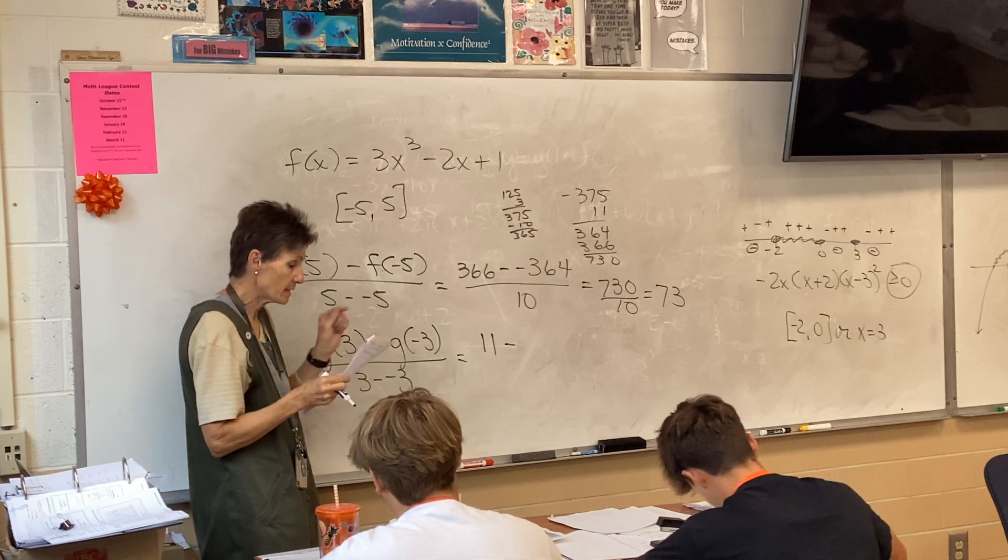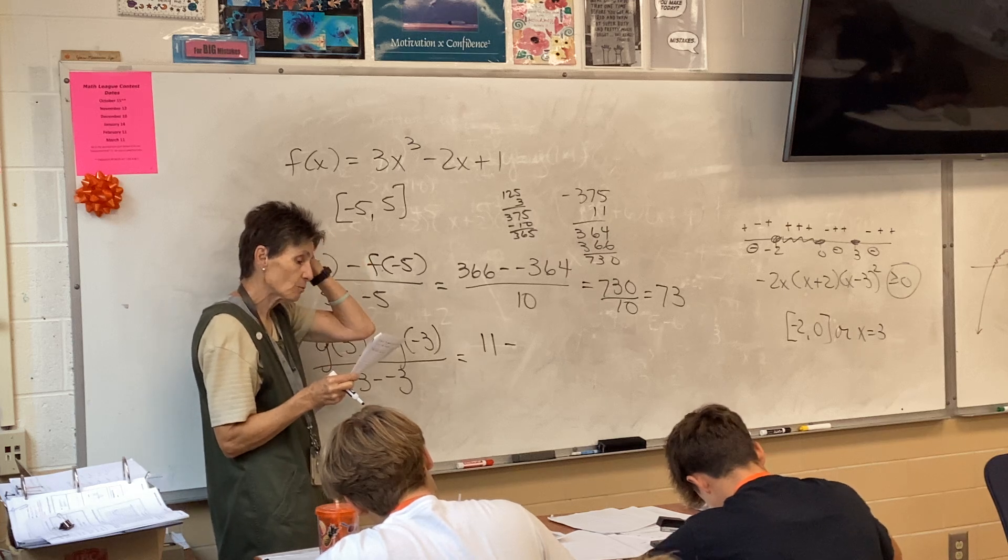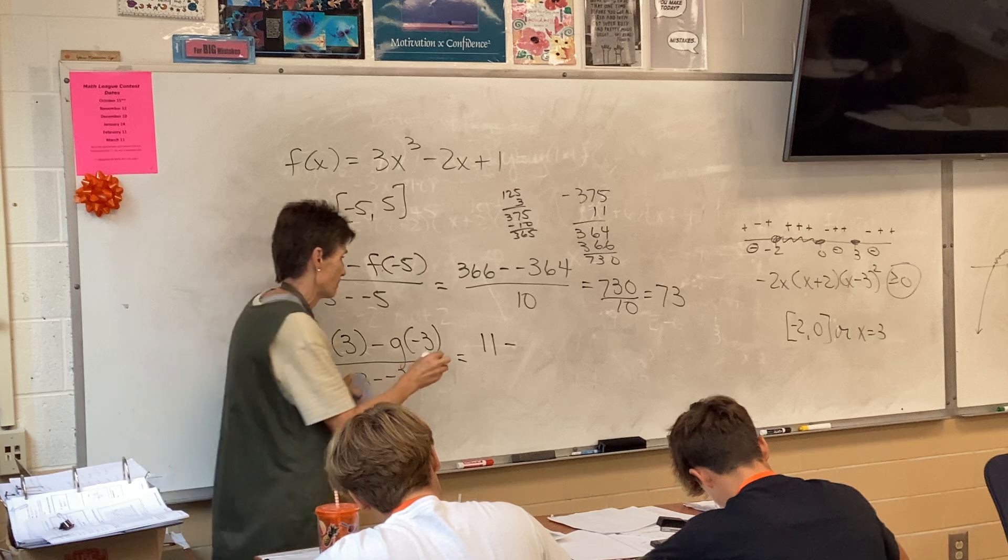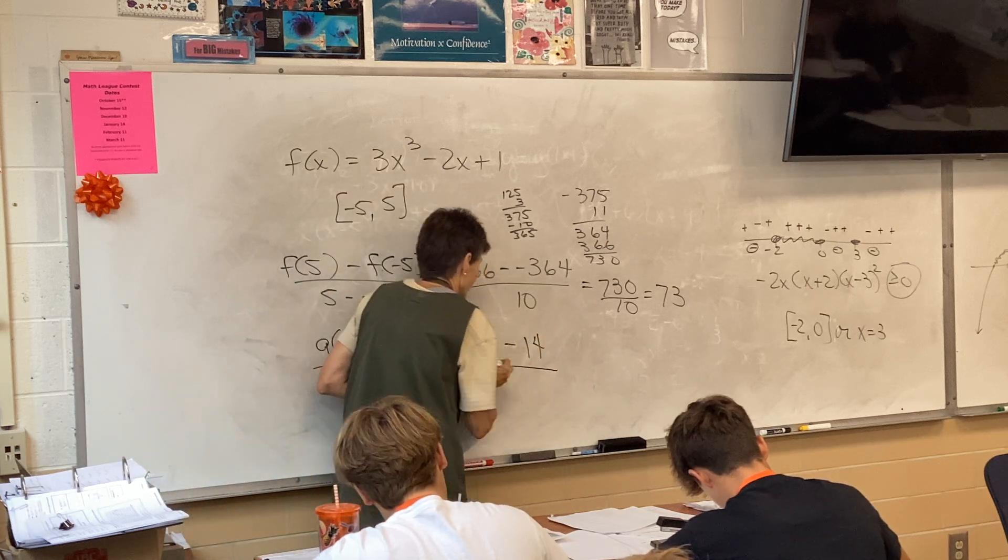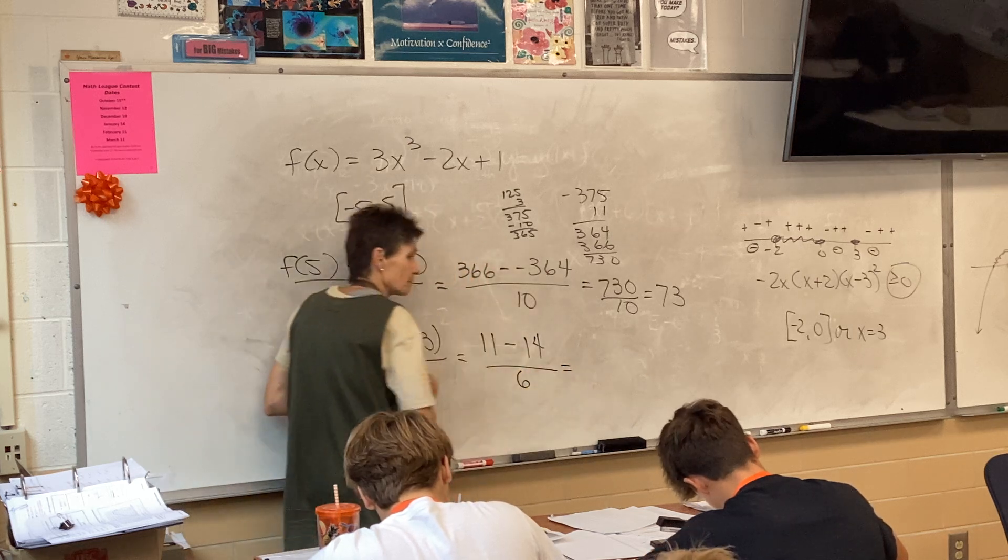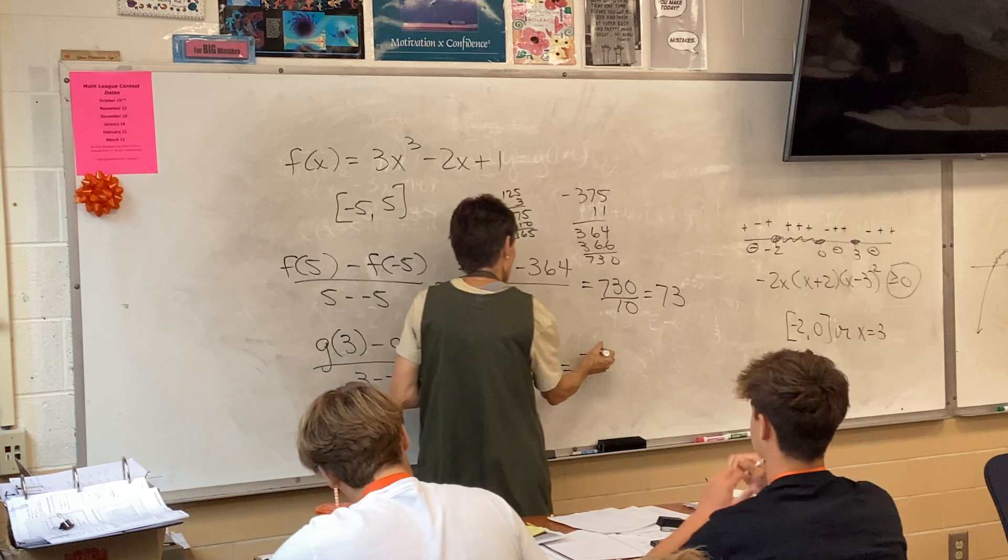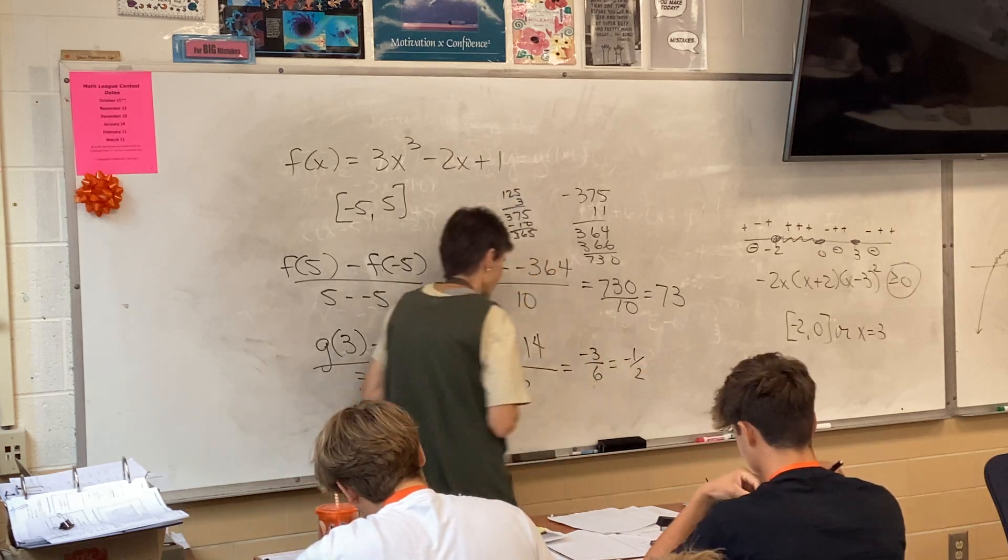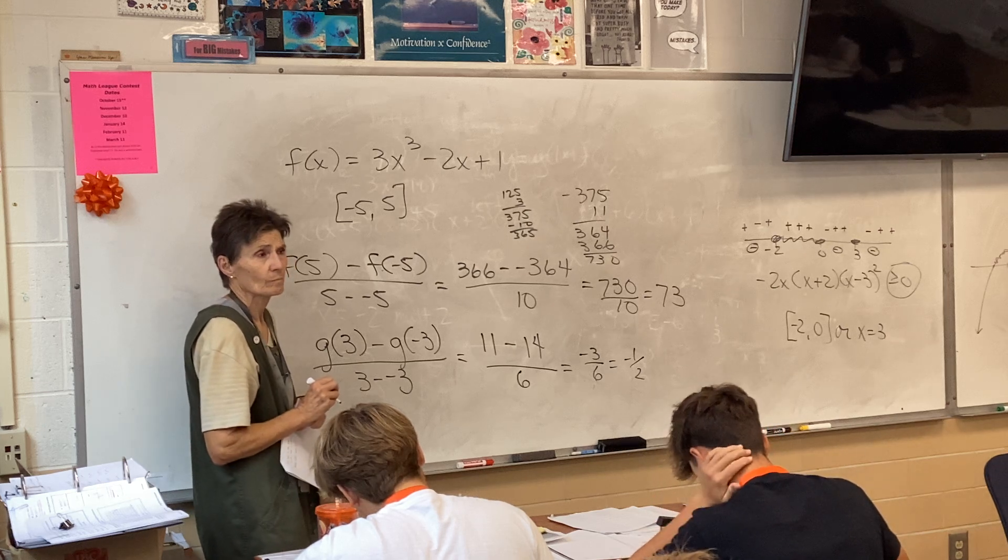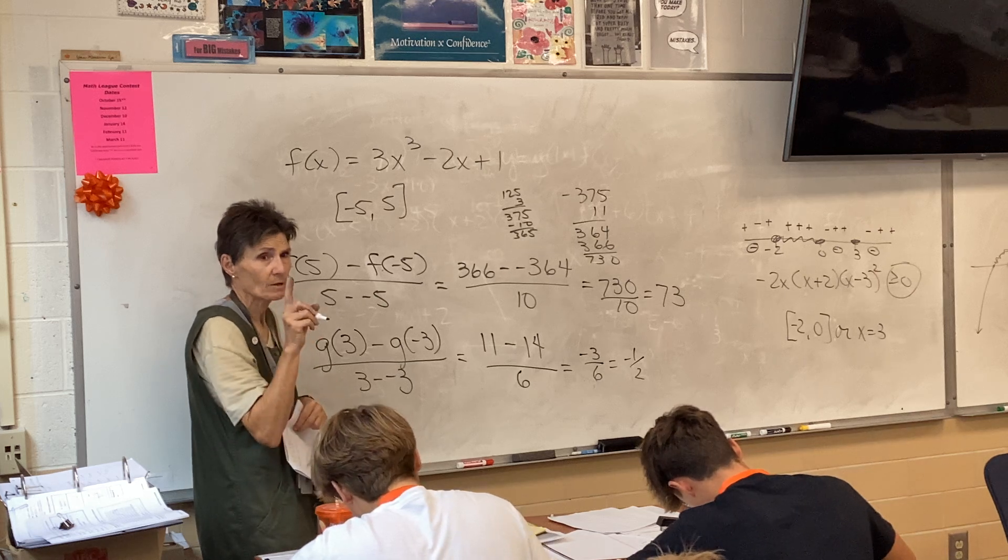And then negative 3 is going to go in the top row. And negative 3 is going to give me 14. So 11 minus 14 over 6. So that one is negative 1 half.